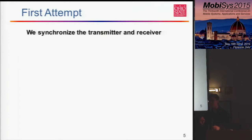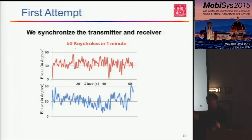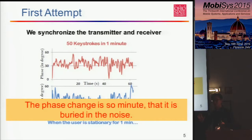We ask a user to type 50 keystrokes in one minute. This is the phase information we get — it looks like we have something, probably 50 keystrokes behind it. For comparison, we ask the user to keep still and repeat the same measurement for one minute without keystrokes. Surprisingly, the second figure has more information than the first one. The reason is obvious: when keystrokes happen, the movement is so minor that all the finger movement is buried in the noise.